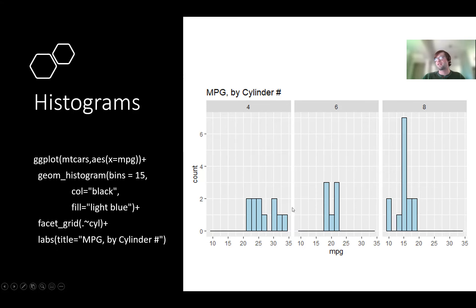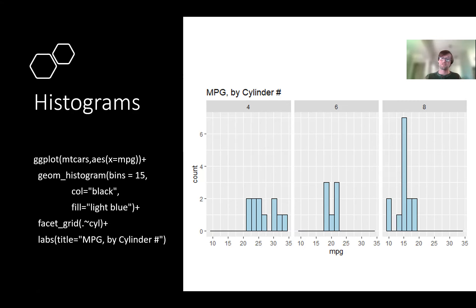The important thing when doing this call is to make sure you do a period then the tilde then the variable you want to split by. You can do it two levels — if you wanted to look at carburetor number versus cylinder, you could do carburetor tilde cylinder, but those can get pretty messy. Facet_grid is great — I use it all the time, and facet_wrap is similar. I think it just alternates the way that they split them — one's horizontal, one's vertical.